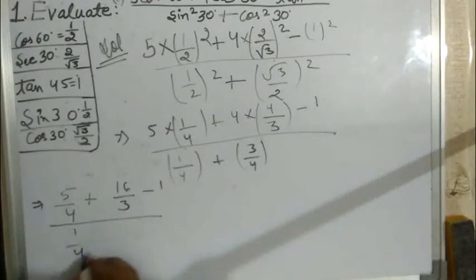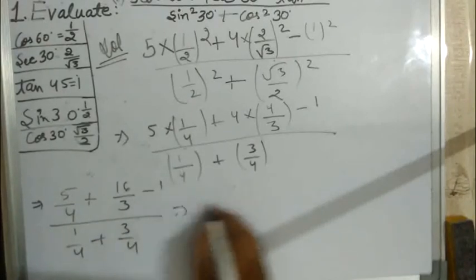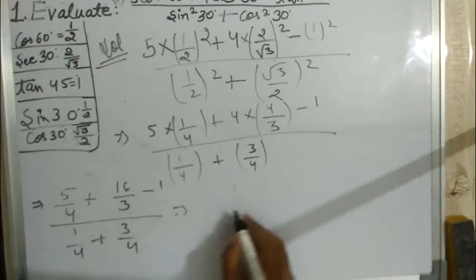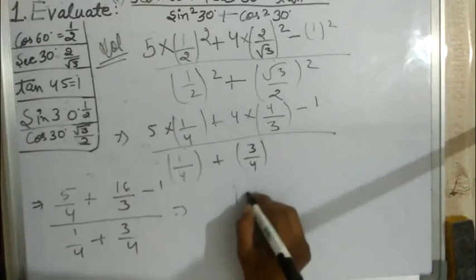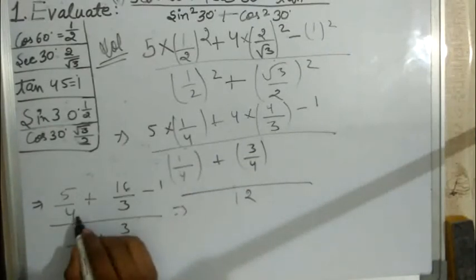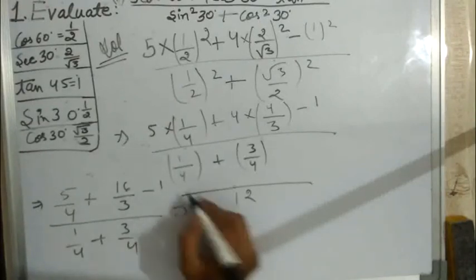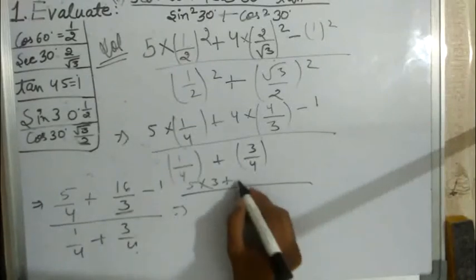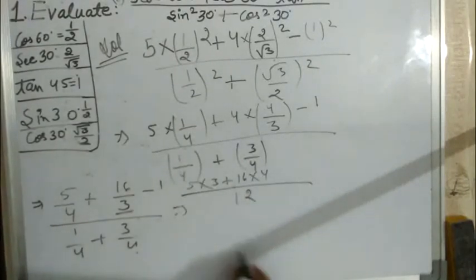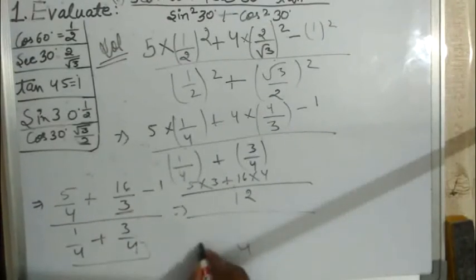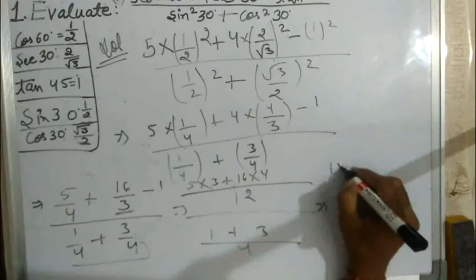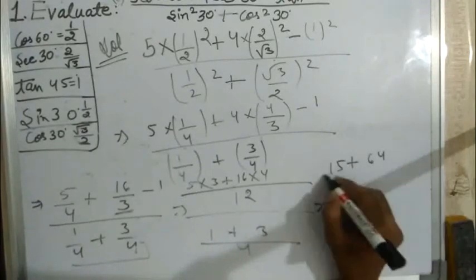Here is 1/4 plus 3/4. LCM is equal to 12. 5 times 3 is 15, 16 times 4 is 64, minus 12 upon 12.